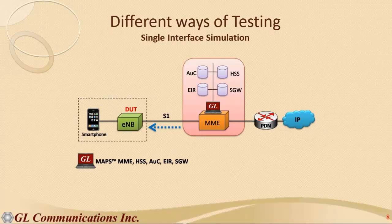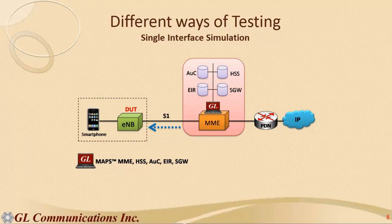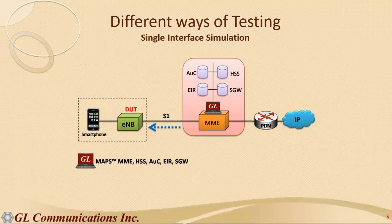Now let's see how this tool can be useful in testing your equipment. One approach is single interface simulation, where the user has their own DUT as an E-NodeB and wants the network to be simulated so they can test their own E-NodeB. We provide only the MME, which simulates only the S1AP interface. As you can see in the diagram, the MME is embedded with all other entities — EIR, HGW, HSS — so it's a single application where you can test your E-NodeB with GL acting as MME, testing only the S1AP interface.